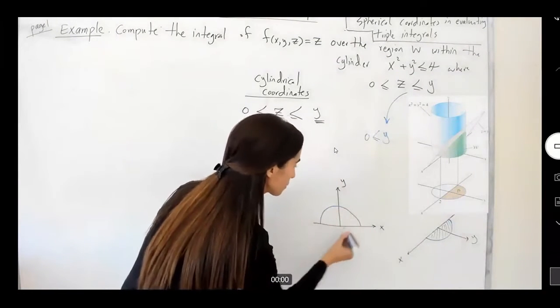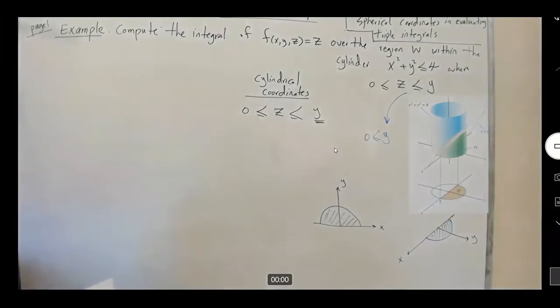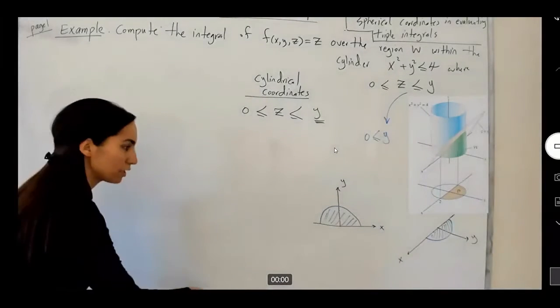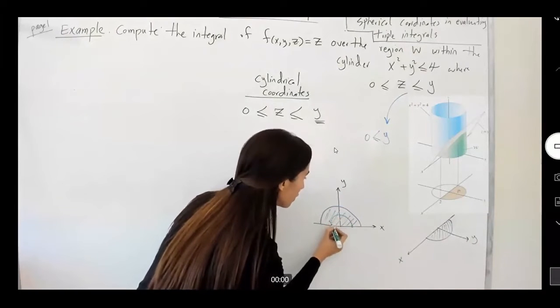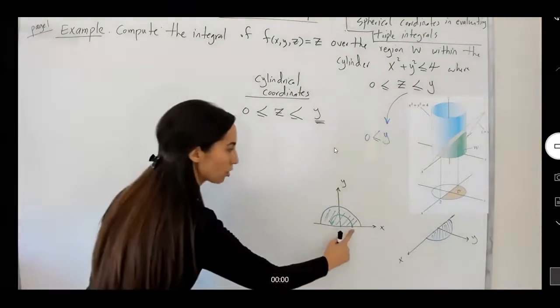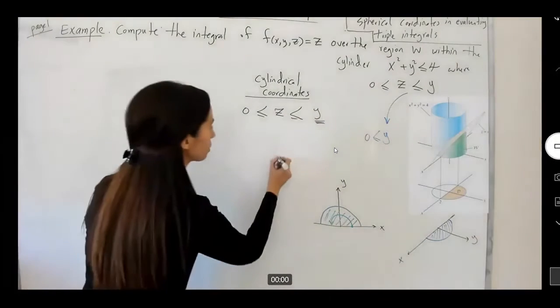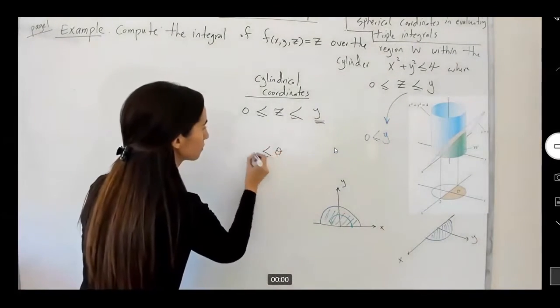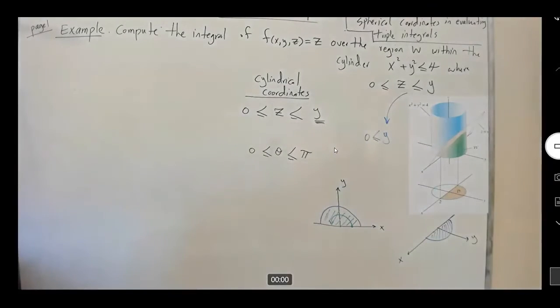It's not very hard to see theta ranges between 0 to π. This is for your theta. It just doubles starting from 0 and it stops at π. So, this is for my theta. 0 to π. I'm trying to use cylindrical coordinates on this.